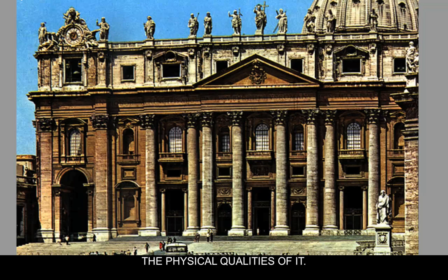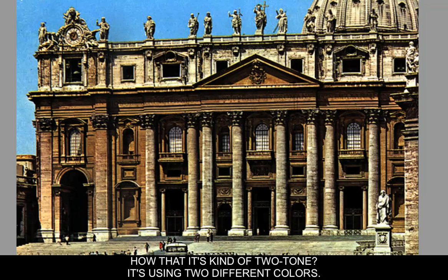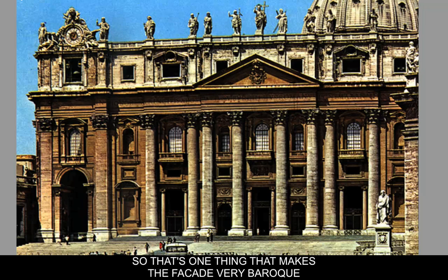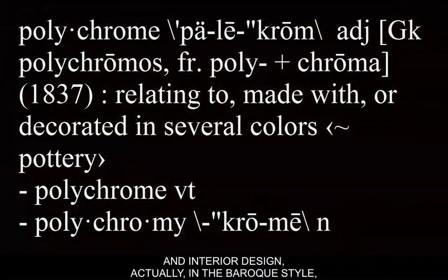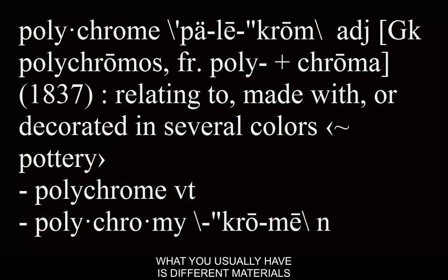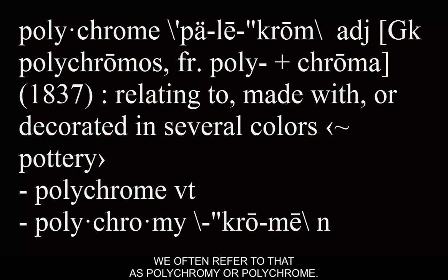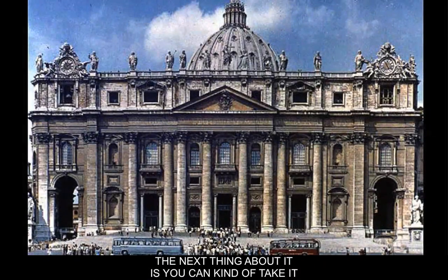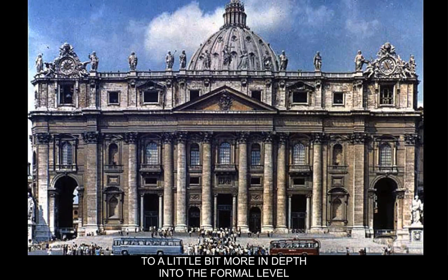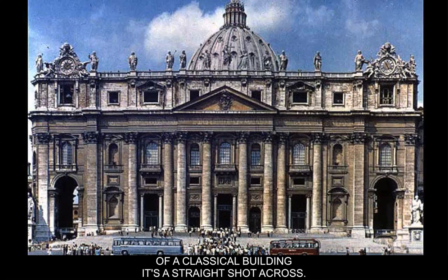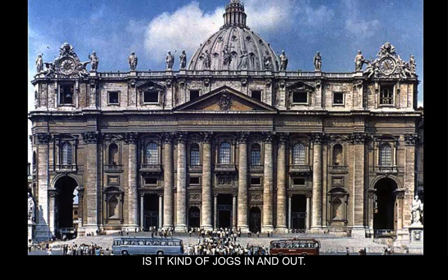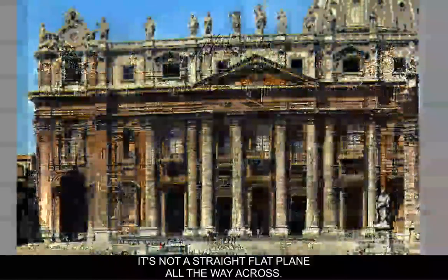The facade exhibits the physical qualities of Baroque first from a formal point of view. Are you seeing how it's kind of two-tone — using two different colors? That's one thing that makes the facade very Baroque, because usually in Baroque sculpture, design, and interior design, you have different materials being used and different colors. We often refer to that as polychromy. Also, when you look at the facade by Carlo Maderno, instead of a straight shot across like a classical building, it kind of jogs in and out — it's not a flat plain all the way across.